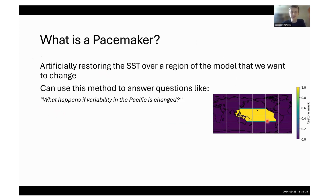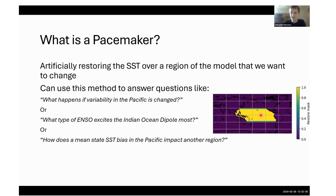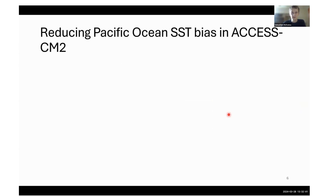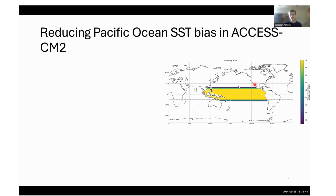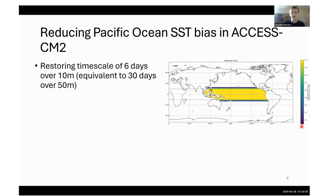This lets us answer questions like what happens if we reduce variability in the Pacific, or what type of ENSO impacts the Indian Ocean Dipole more, or how does the mean state in the Pacific Ocean impact on the Indian Ocean. We've used this restoring mask — it goes between 15 north and 15 south, tapering off to 20 degrees north and south with a damping. The restoring timescale is six days over 10 metres, equivalent to 30 days over 50 metres.